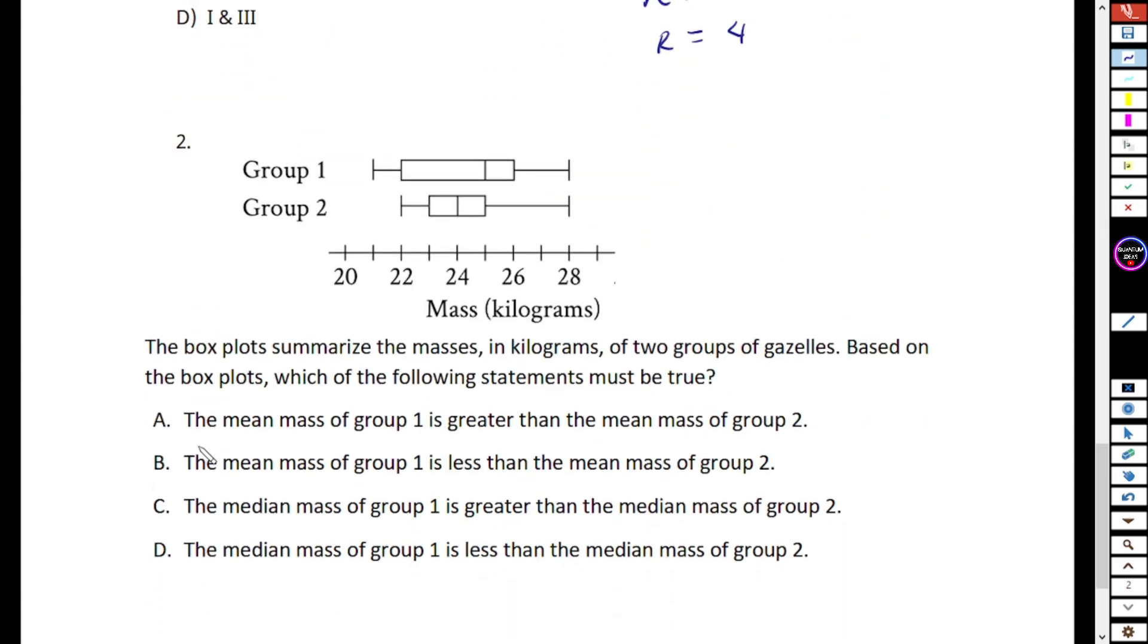We have another one. There is the box plot for group one, box plot for group two, and mass in kilograms. The box plots summarize the masses in kilograms of two groups of gazelles. Based on the box plots, which of the following statement must be true? The mean. We know that the box plot doesn't give any information about the mean, so if it's talking about mean, just ignore.